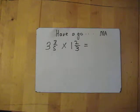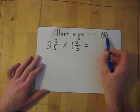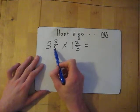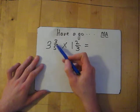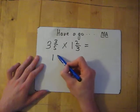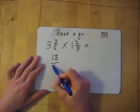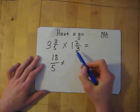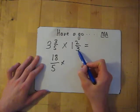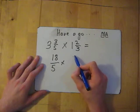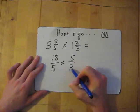So, mixed fraction. MA needs the help. MA. Multiply, add. So, 3 times 5, which gives me 15. Add the 3, gives me 18. So, 18 over 5, times 1 times 3 is 3. Add the 2 is 5, 5 over 3.